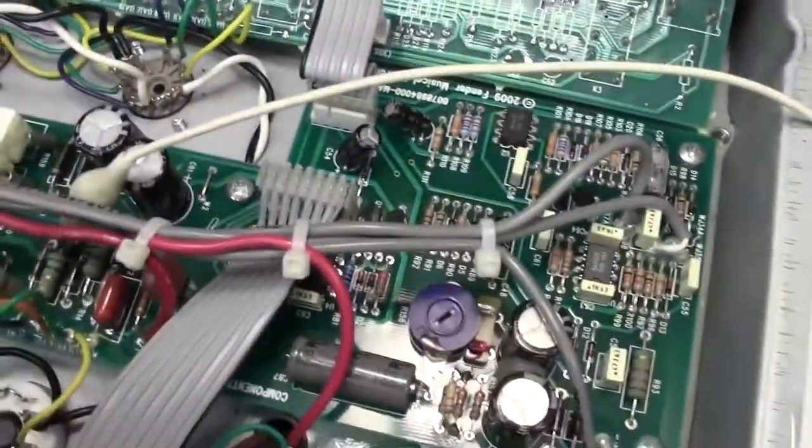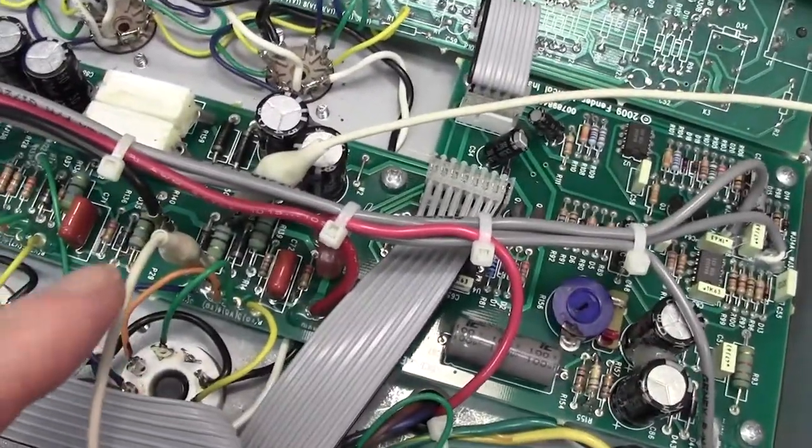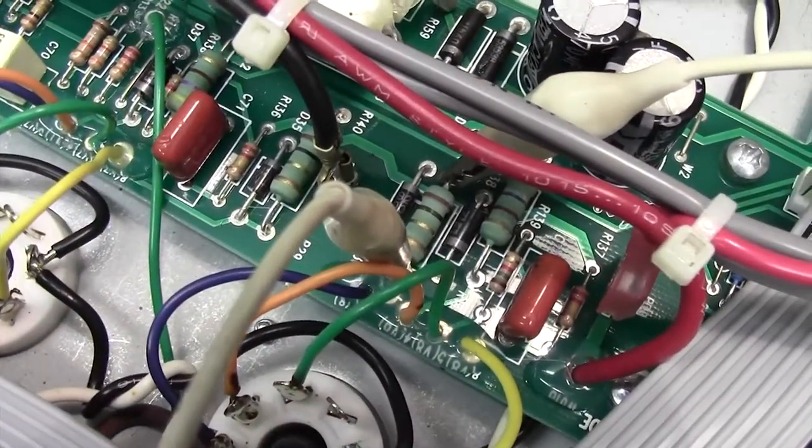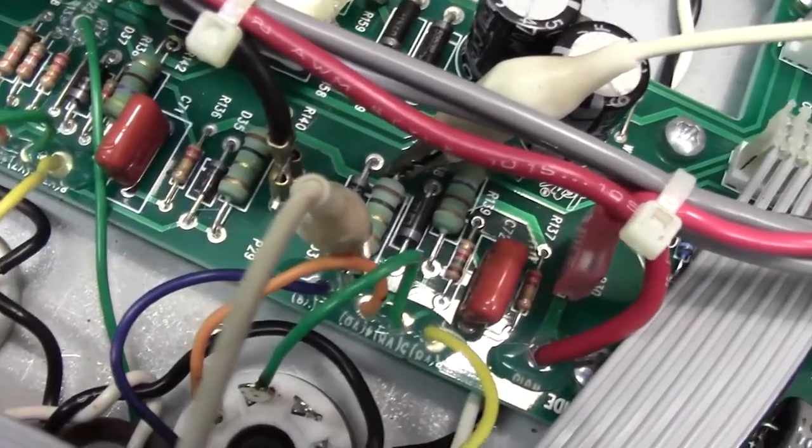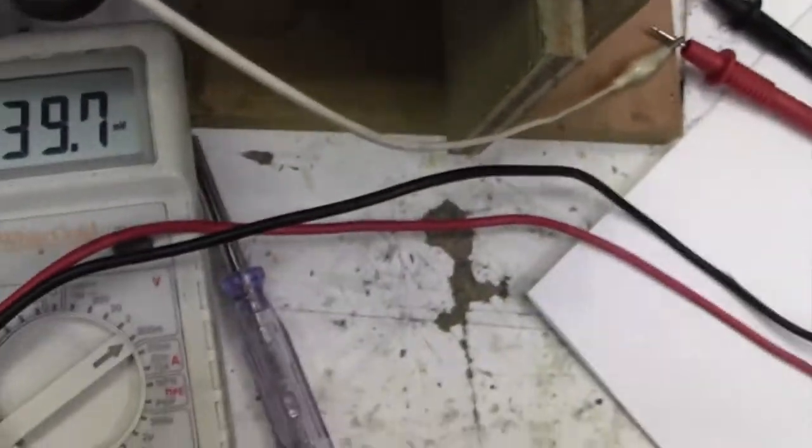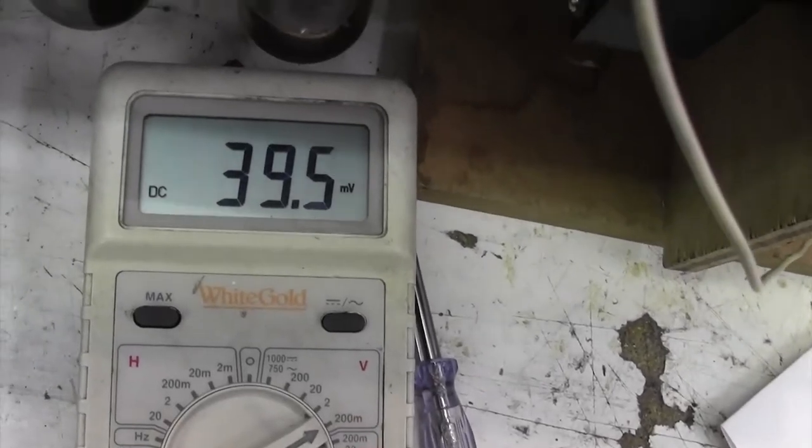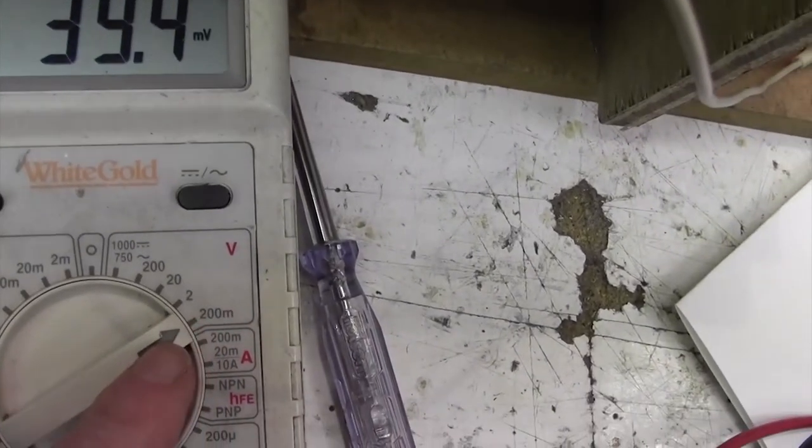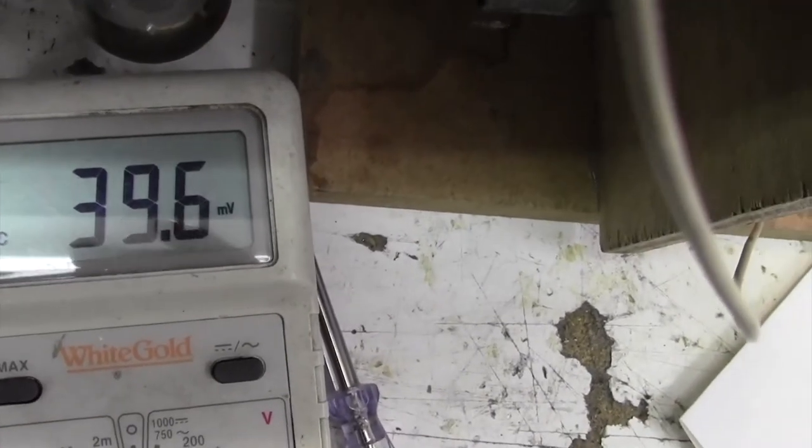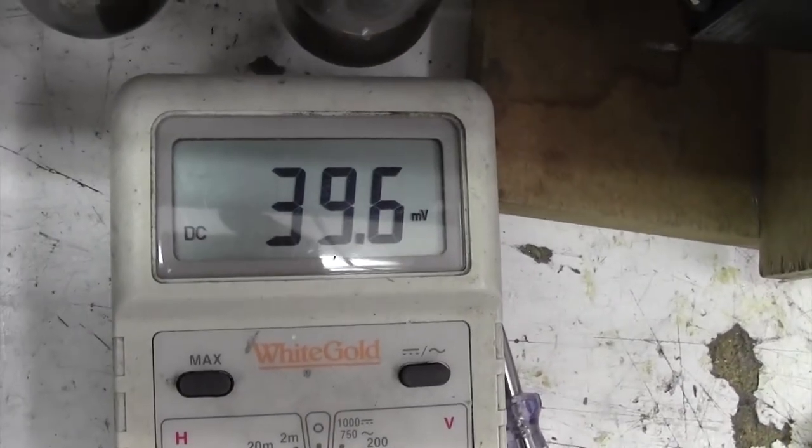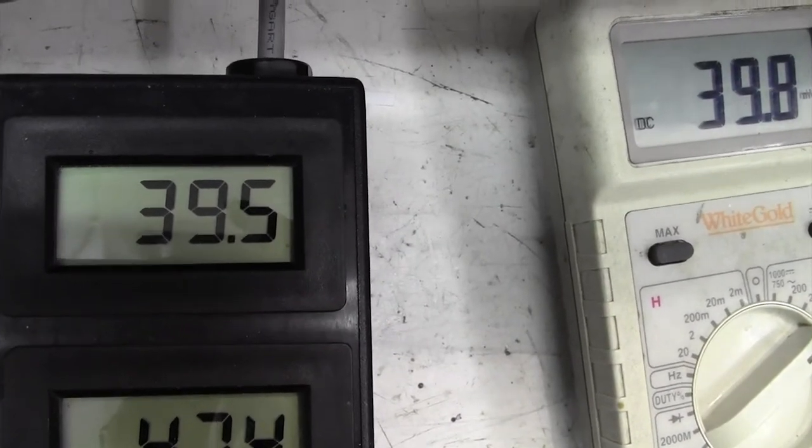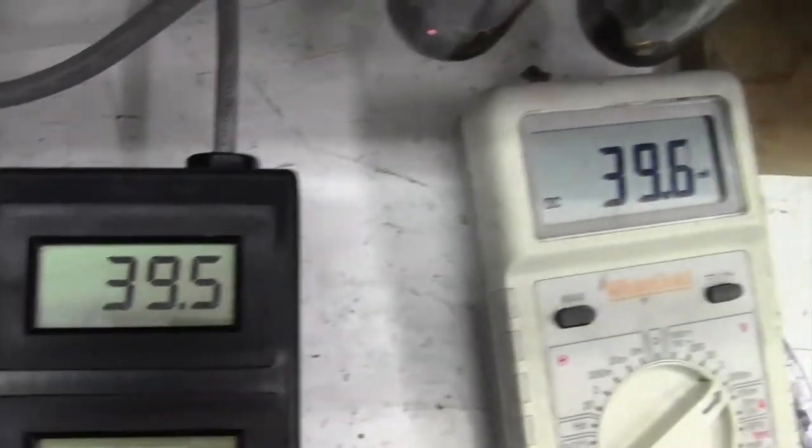So let's hook up the multimeter and see if that's true. Well here we are, I've hooked up my two croc leads to one of the resistors, one of the 1 ohm resistors. Remember, the other one is to the left of it, so I'm looking at the current through one of the valves. That's gone back to my multimeter, set on 200 millivolt scale, and it's reading 39.5 millivolts, which, because it's a one ohm resistor, is 39.5 milliamps. Go across to my bias meter, 39.5 milliamps.